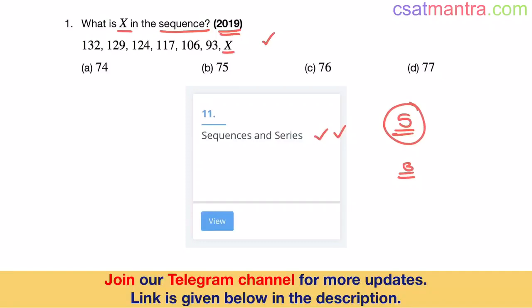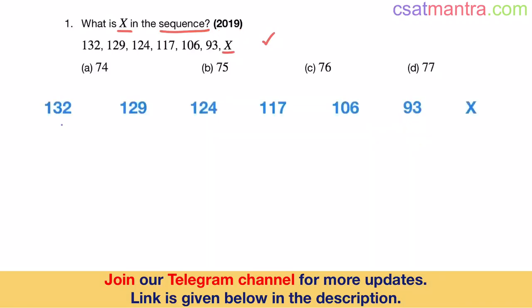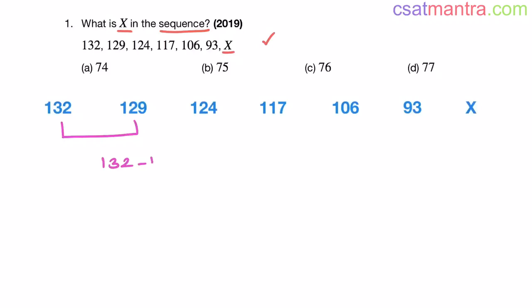My friends, now let's see what pattern this sequence follows. 132 to 129, the difference is 3. 129 to 124, okay, the difference is 5. 124 to 117, the difference is 7. Now if you observe, these are all odd numbers.